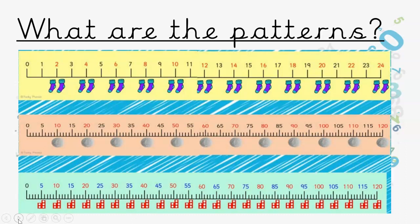And don't forget the fives. Five, ten, fifteen, twenty, twenty-five, thirty, thirty-five, forty, forty-five, fifty, fifty-five, sixty-five, seventy-five, eighty-five, ninety-five, a hundred, a hundred and five, a hundred and ten, a hundred and fifteen, and a hundred and twenty. Well done.